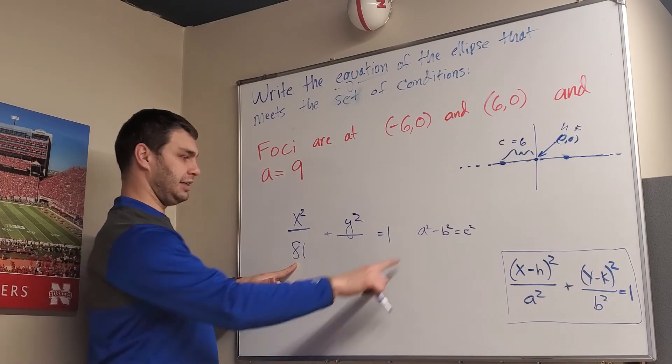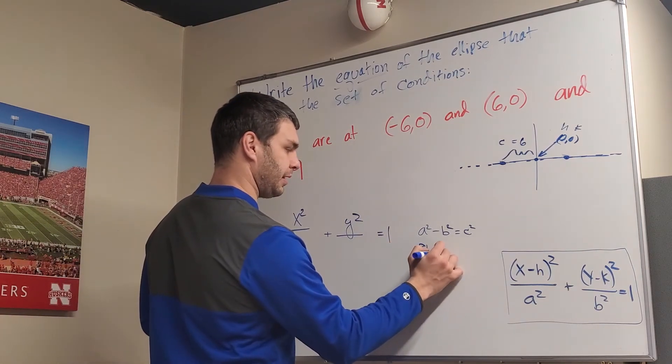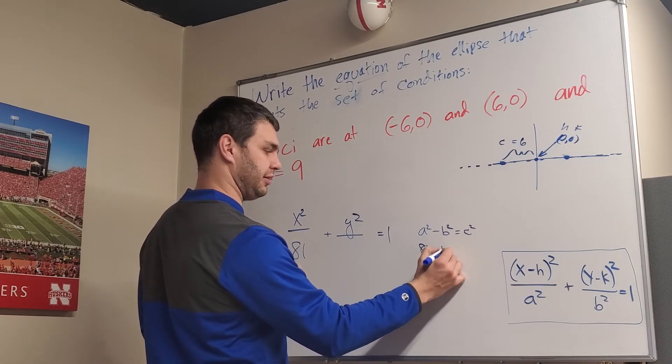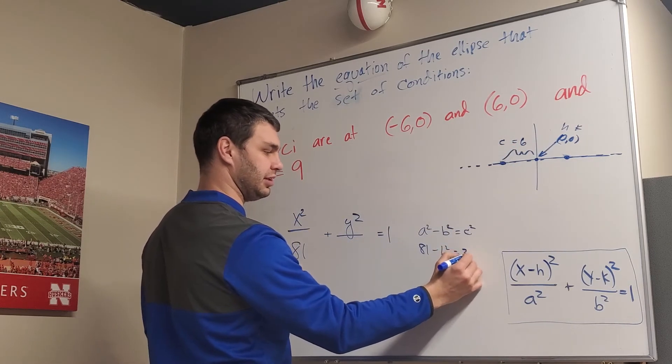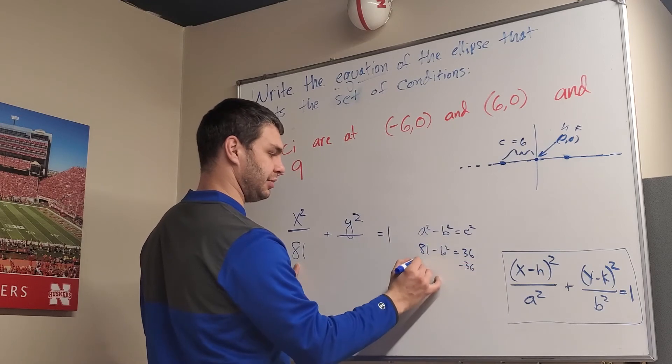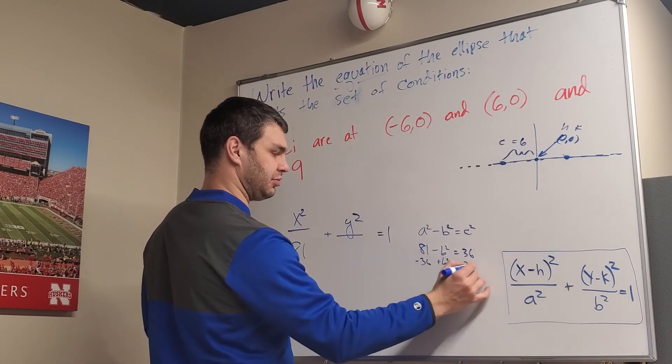Alright, a² - b² = c². If I fill in these different parts here, a² is 81, b² we don't know - that's what we're trying to find - so minus b², and then c² well, c is 6, c² is 36.